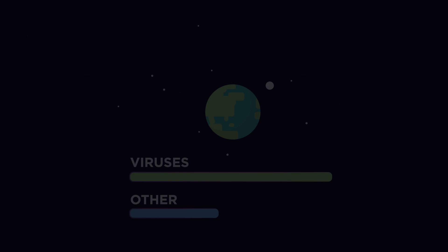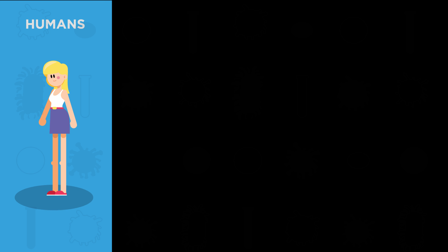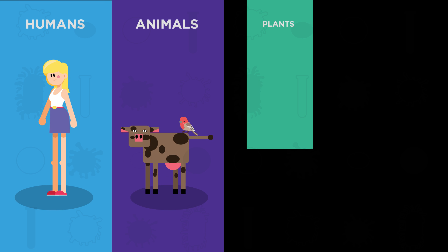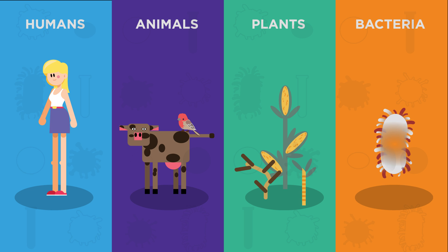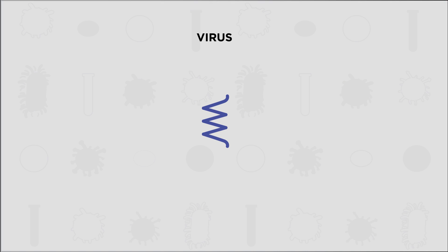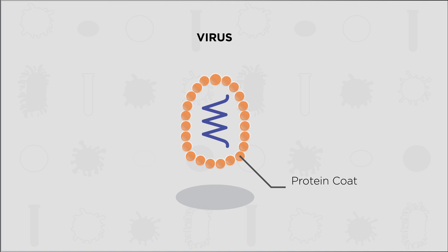Viruses can infect humans or animals, plants and even bacteria. Viruses are very simple. They are made up of a protein coat surrounding a strand of genetic material. The genetic material can either be DNA or RNA.